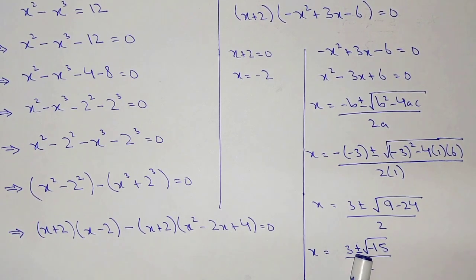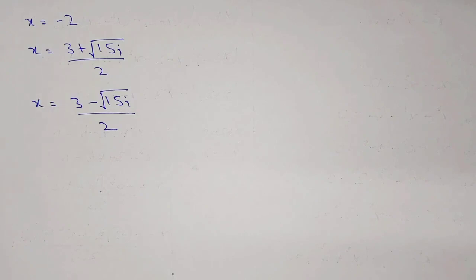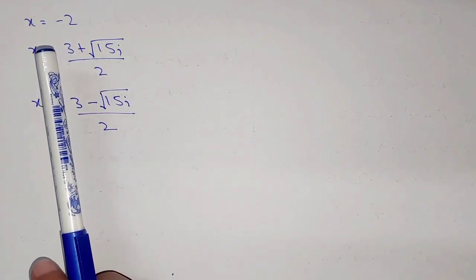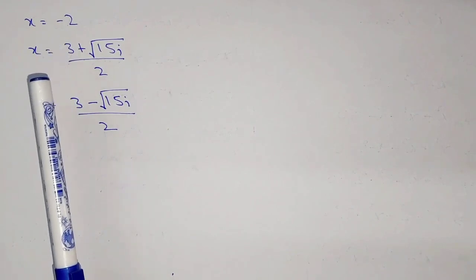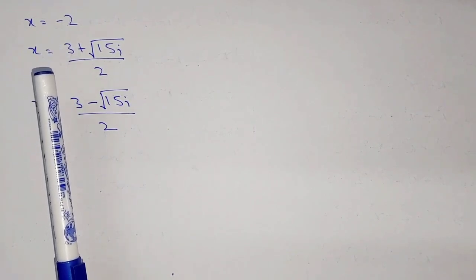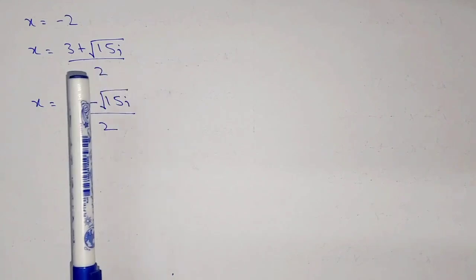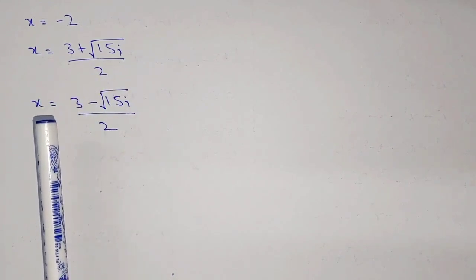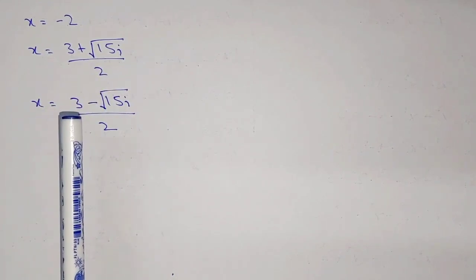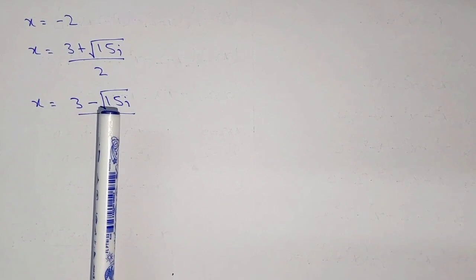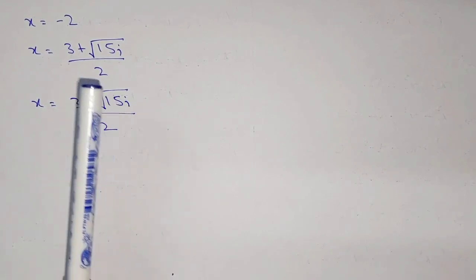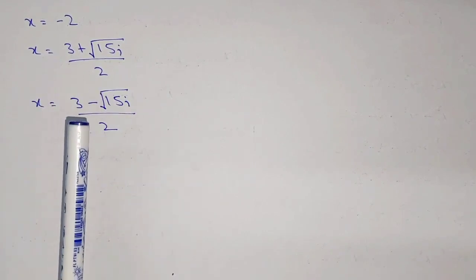Since under root of minus 15 can be written as under root 15 times i, we now have three values of x. The first is x equal to minus 2. The second is x equal to 3 plus root 15 i, divided by 2. And the third value is x equal to 3 minus root 15 i, divided by 2.